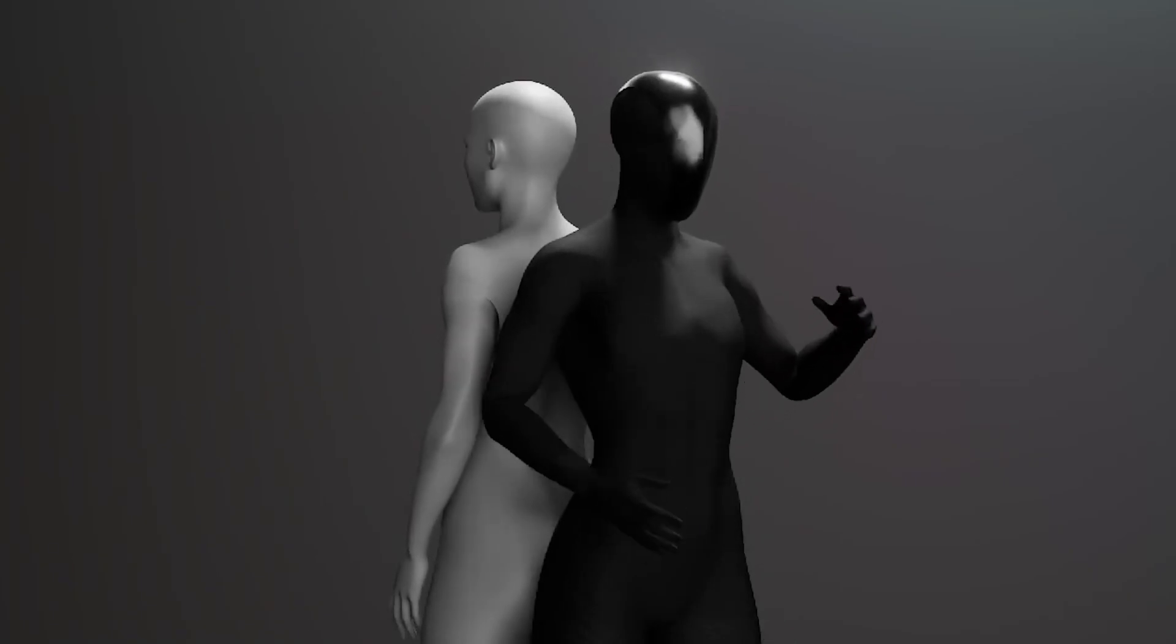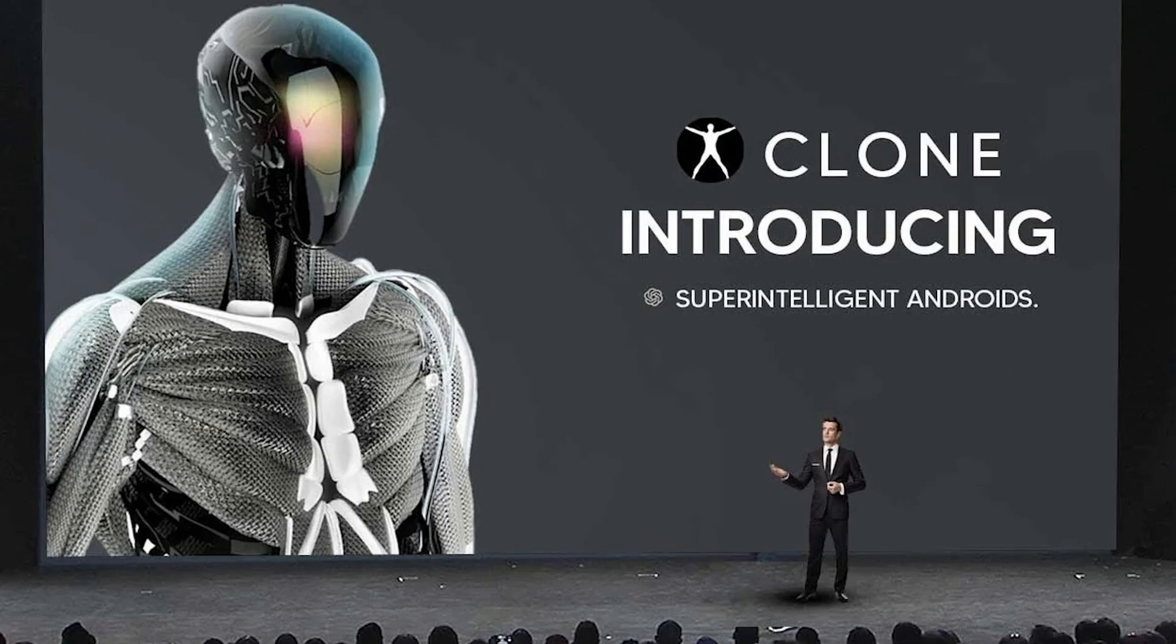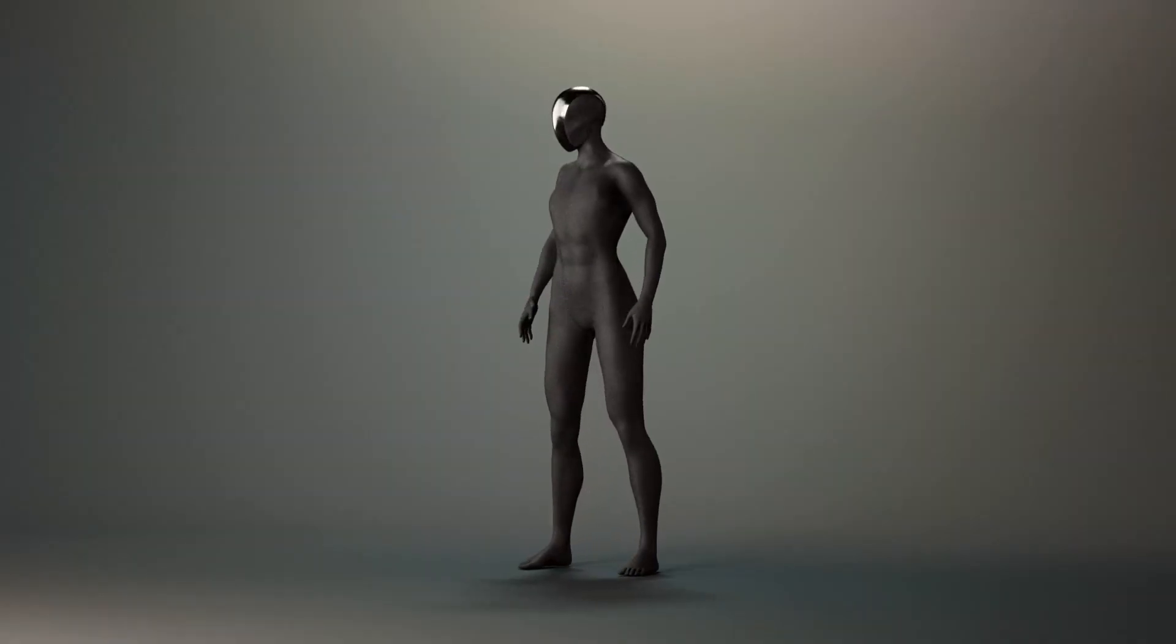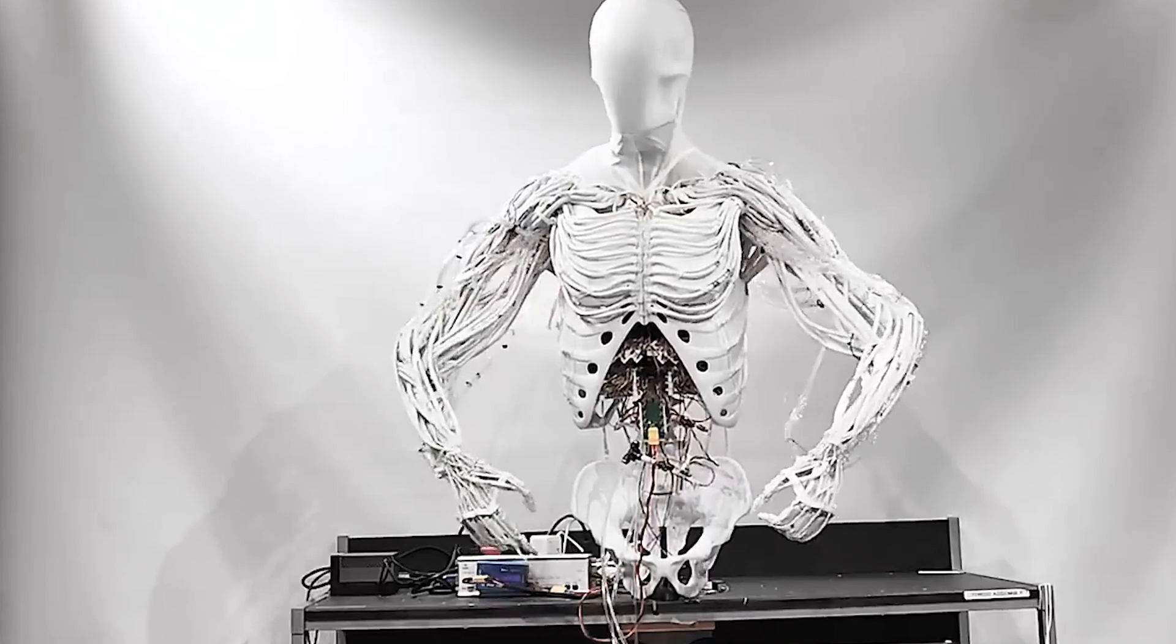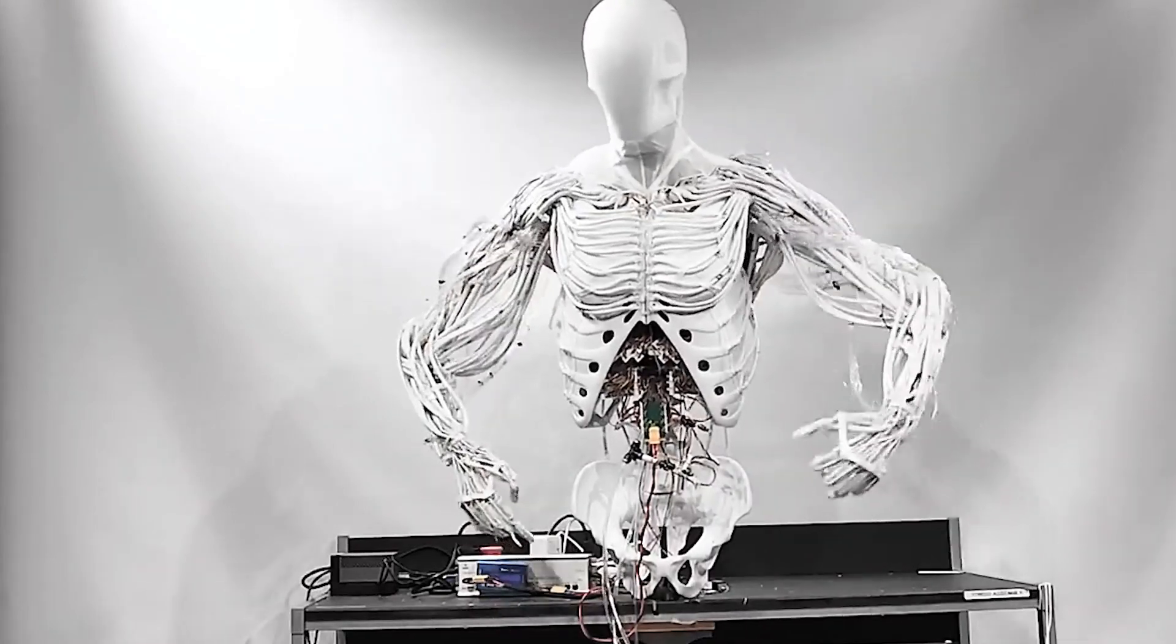Clone Alpha is a humanoid robot unlike anything we've seen before. Built by Clone Robotics, this machine is designed with synthetic organs, artificial muscles, and a structure that mirrors human anatomy down to the smallest detail.